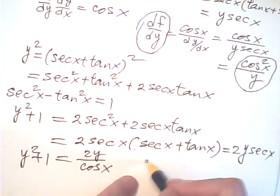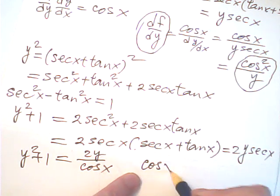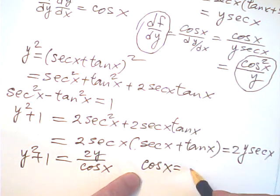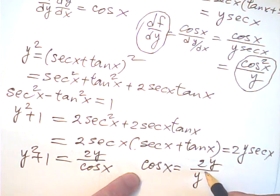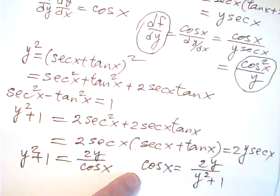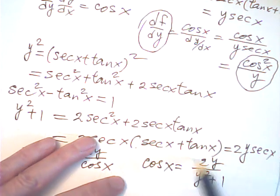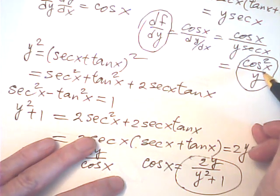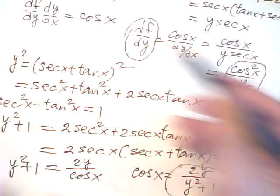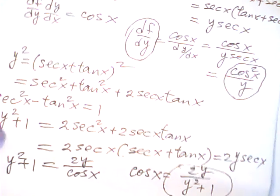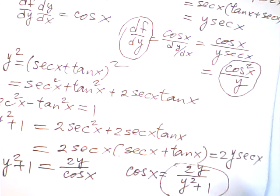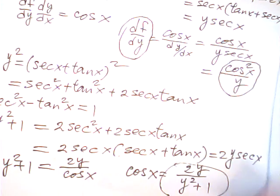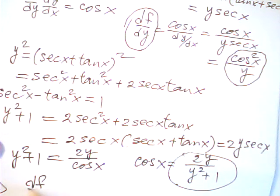So y² + 1 = 2y·sec x = 2y over cos x. Therefore cos x = 2y over (y² + 1). Now I can plug this into df/dy. df/dy equals cos²x over y, so plugging in cos x = 2y/(y² + 1), I get cos²x = 4y²/(y² + 1)².